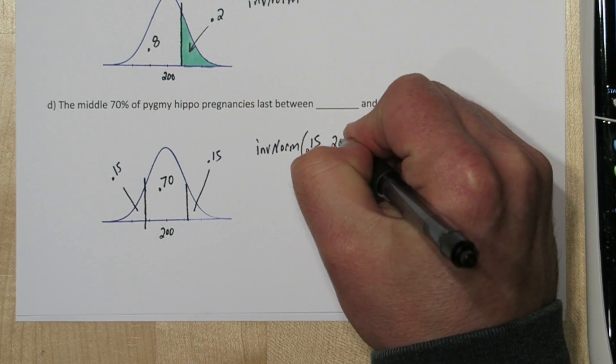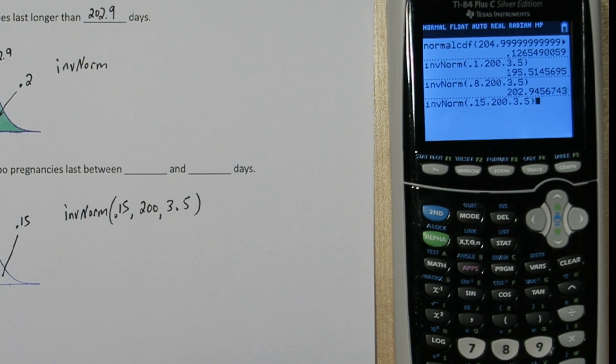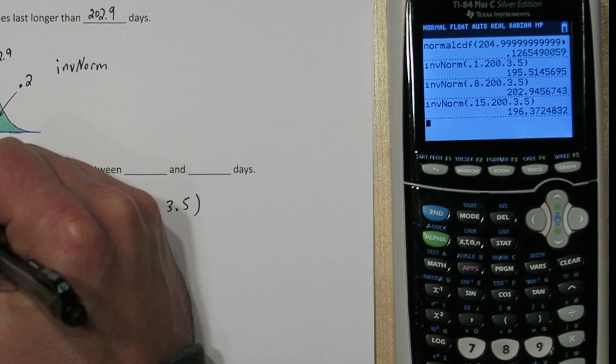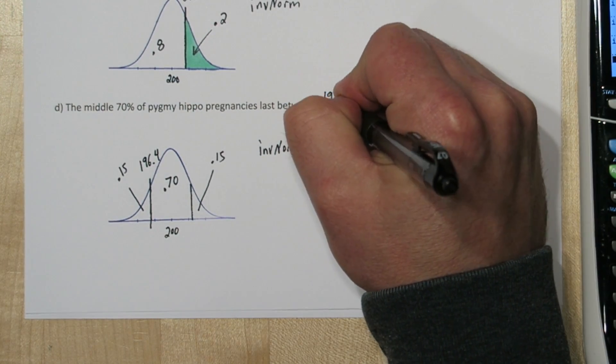So we're going to do inverse norm of 0.15 with our mean and standard deviation. So this cutoff value is about 196.4.